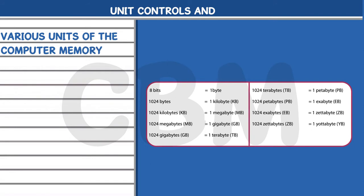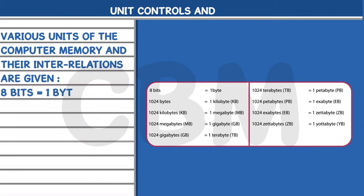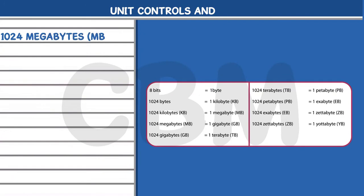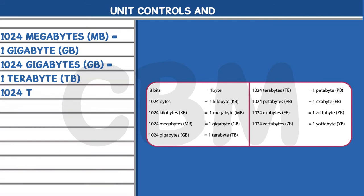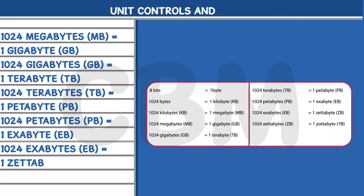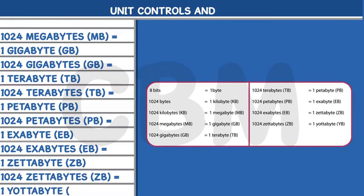The units of computer memory and their interrelations are: 8 bits = 1 byte; 1024 bytes = 1 kilobyte (KB); 1024 KB = 1 megabyte (MB); 1024 MB = 1 gigabyte (GB); 1024 GB = 1 terabyte (TB); 1024 TB = 1 petabyte (PB); 1024 PB = 1 exabyte (EB); 1024 EB = 1 zettabyte (ZB); 1024 ZB = 1 yottabyte (YB).